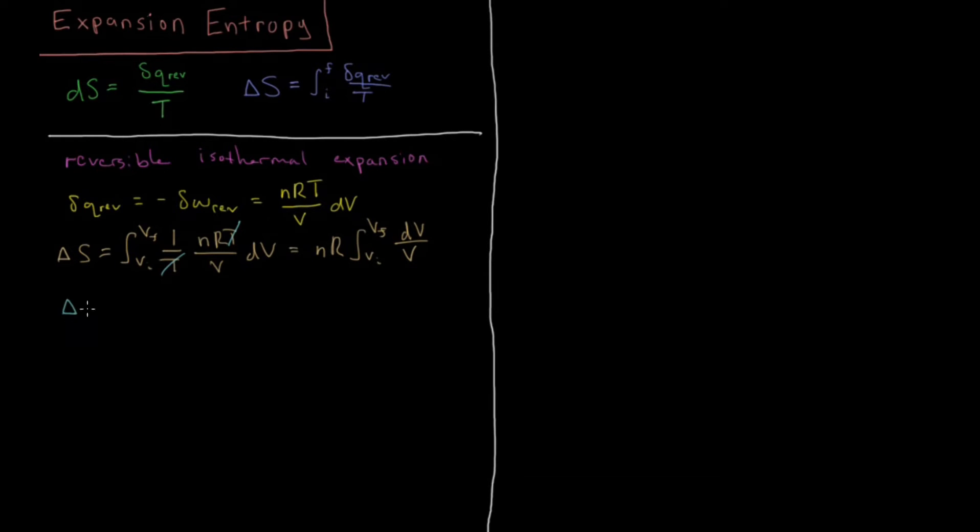So the entropy change we get for expanding or compressing a gas in an isothermal way is going to be the number of moles times the gas constant times log of V final over V initial.